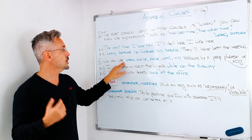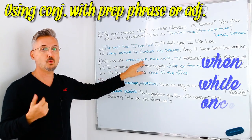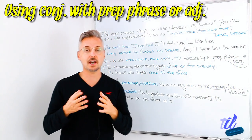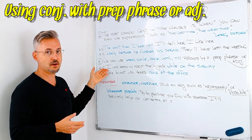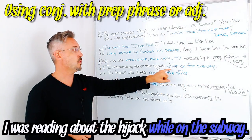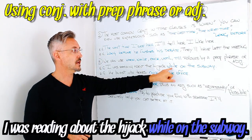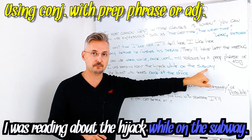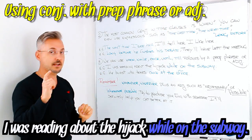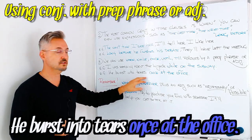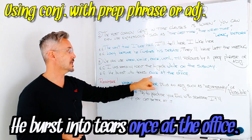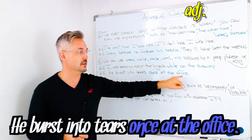We can use 'when,' 'while,' 'once,' 'until,' or 'till' followed by a prepositional phrase or adjective. Example: 'I was reading about the hijack while on the subway' — 'while' is the conjunction, 'on the subway' is the prepositional phrase. Another example: 'He burst into tears once at the office' — 'once' is the conjunction, 'at the office' is the prepositional phrase.